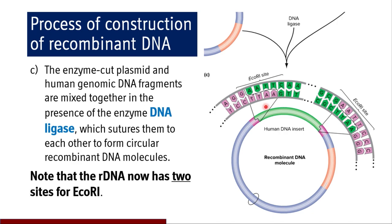Note that the recombinant DNA now has two ECO-R1 sites, because at both cut points there were two sticky ends. The sequence from human genomic DNA has been added to the opened bacterial plasmid, and now these two sites are present in the recombinant DNA molecule.